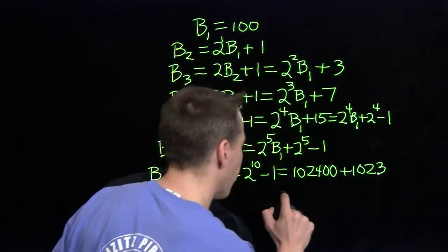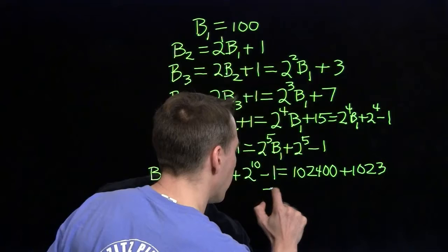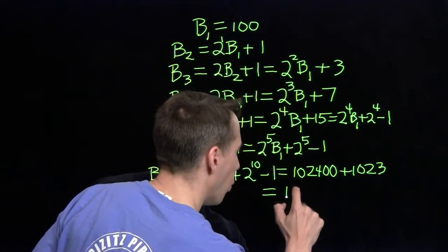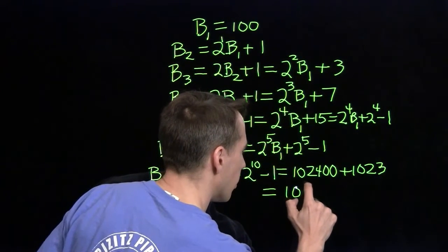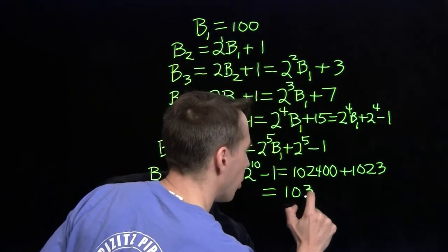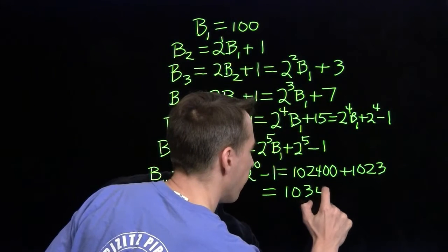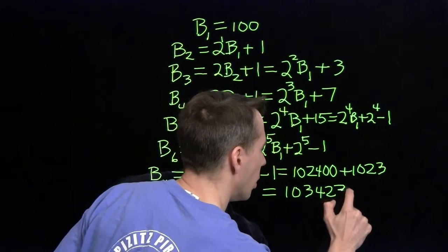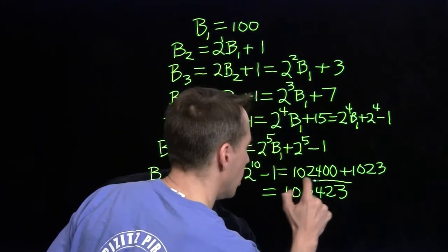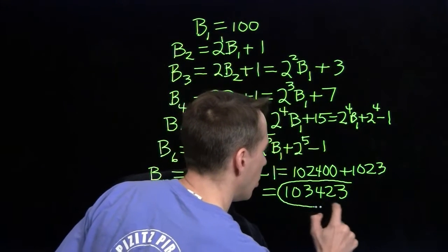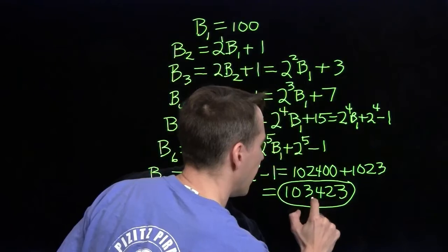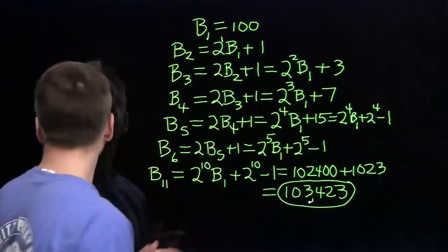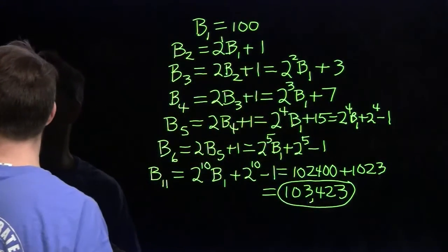Adding 102,400 and 1,023 very carefully gives us 103,423. We found the pattern, we solved the problem, and we're on to the next one.